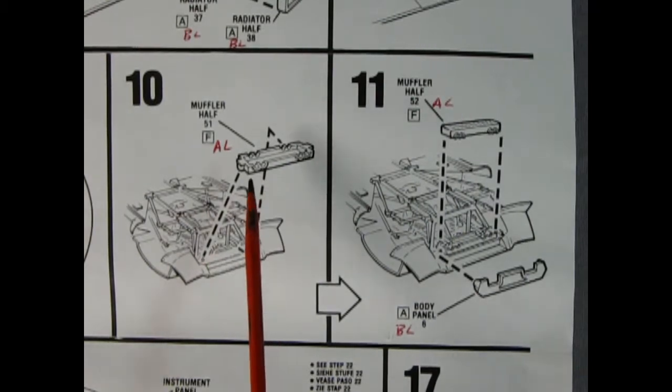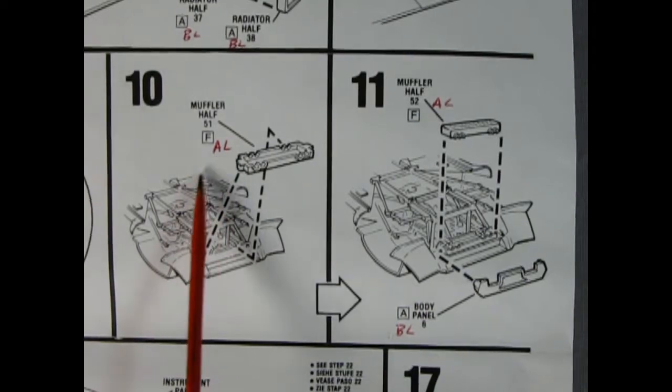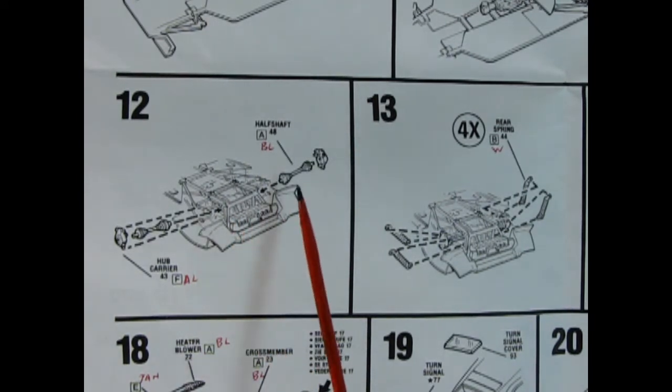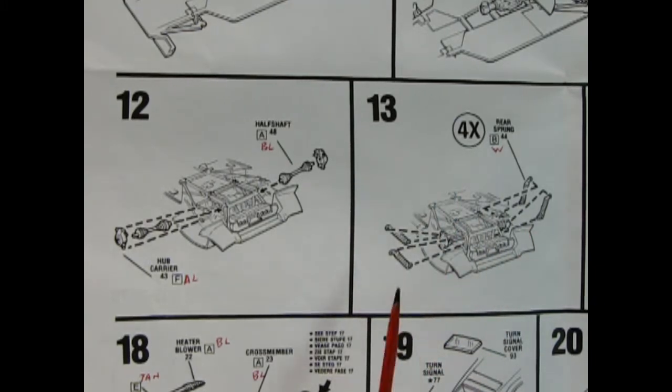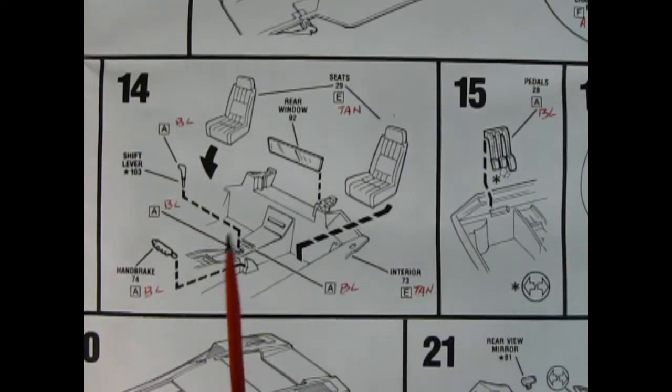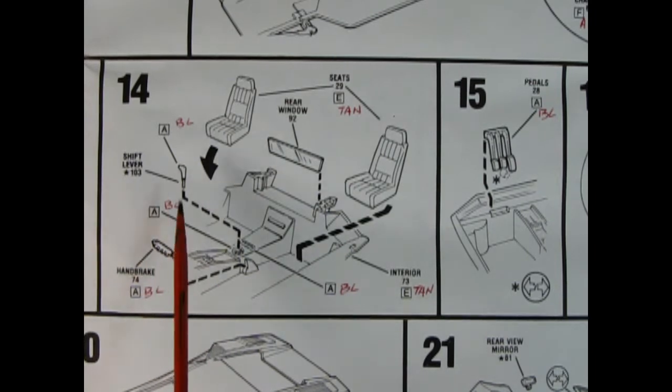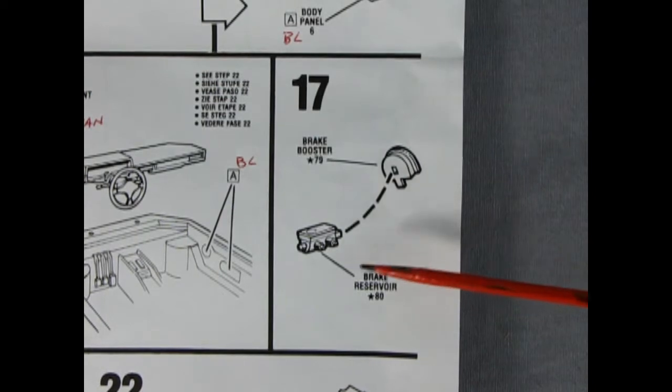Panel 10 shows installation of the lower muffler half. Panel 11 shows the upper half being glued in place, as well as this body panel. Trevor marked down what the colors are, so F is aluminum. Panel 12 shows our independent rear suspension being glued into place - the hub carrier on the outside and our half shafts. Panel 13 shows the shock absorbers which you do four times. In panel 14 we see our interior being glued together - these nice bucket seats drop onto the floor pan, then the shifter lever, hand brake, and this nifty rear window. Don't forget your pedals in panel 15. Panel 17 shows the brake booster and brake reservoir being glued together.